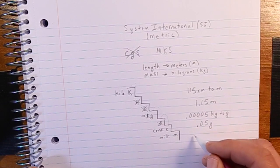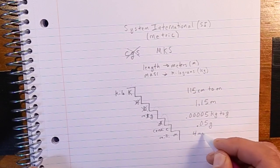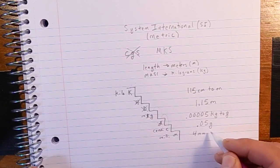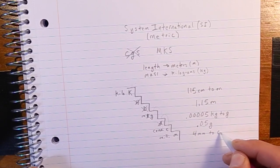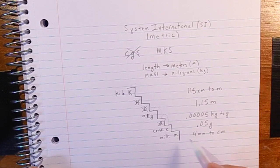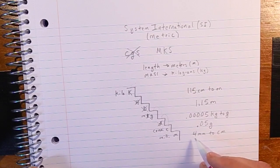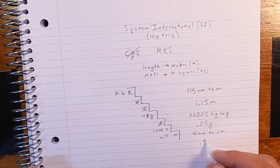And finally, one last problem: 4 millimeters to centimeters. We're on the millimeter step and move one step back to centimeters, so that gives us 0.4 centimeters.